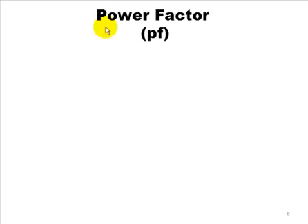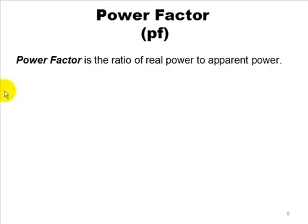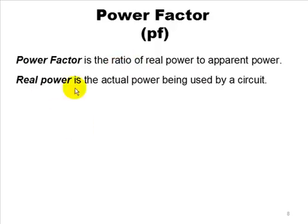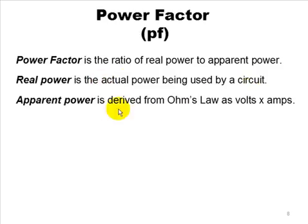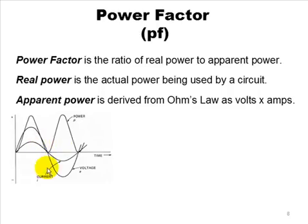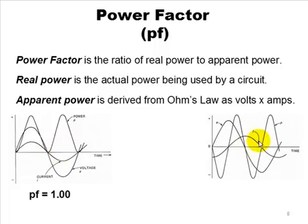Power factor. If you want to know the true power, you've got to multiply volts times amps times the power factor. Power factor is the ratio of real power to apparent power. Real power is the actual power being used by a circuit. Apparent power is that derived from Ohm's Law when you read volts times amps. So let me cut to the chase here. Here's your resistive circuit again. The power factor here is 1 because everything peaks at the same time.